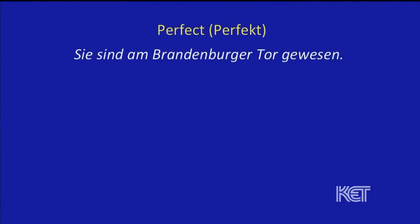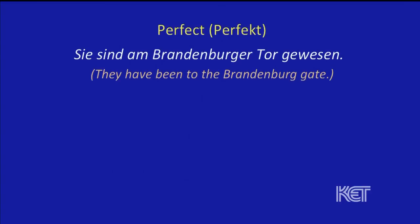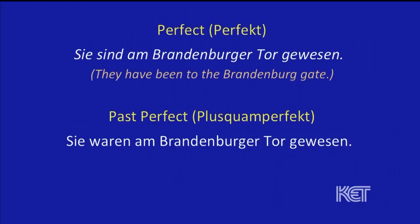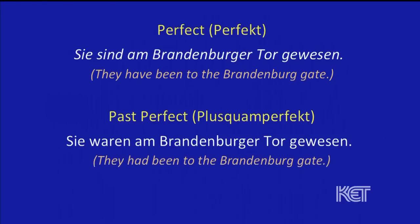The main difference is that in the present perfect, the helping verb is in the present tense, and in the past perfect, it's in the past tense. So we could easily convert a regular perfect sentence into the past perfect. For example: 'Sie sind am Brandenburger Tor gewesen' — 'They have been to the Brandenburg Gate' — becomes 'Sie waren am Brandenburger Tor gewesen' — 'They had been to the Brandenburg Gate.' Only the helping verb changed, from 'sind' to 'waren.'